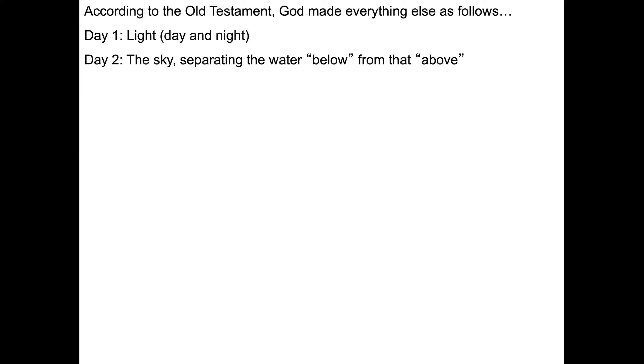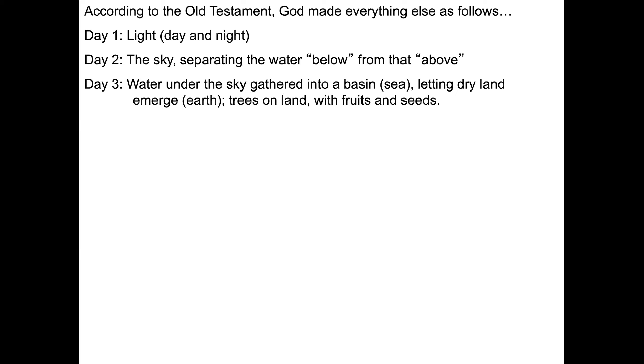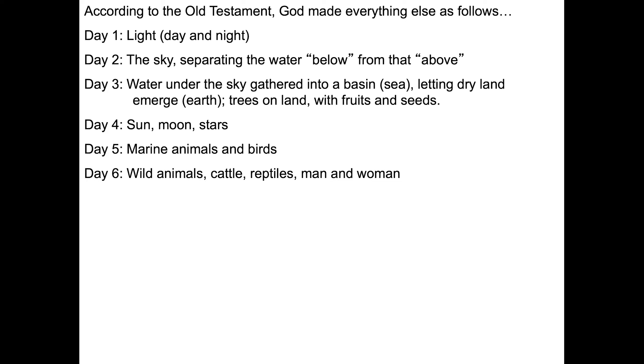According to the Old Testament — and also to some degree in the Koran and the Torah — God made everything as follows. On the first day, separation of day from night. Day two, the sky separating water below from that above. Day three, water gathers into ocean basins and dry land emerges. Trees appear with fruits and seeds. Day four, the sun, moon, and stars appear. Day five, marine animals and birds. Day six, wild animals, cattle, reptiles, man, and woman appear. Day seven, the day of rest.